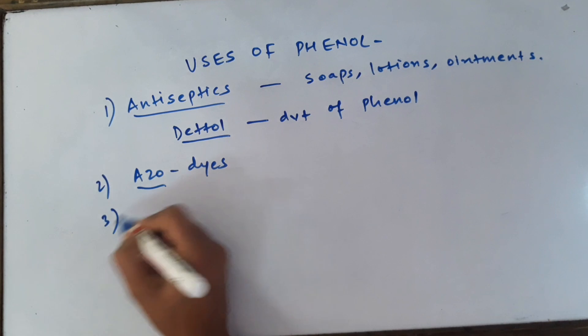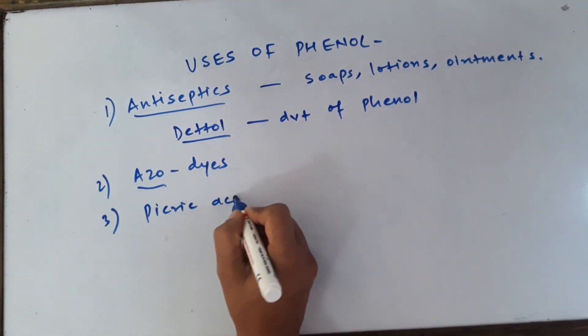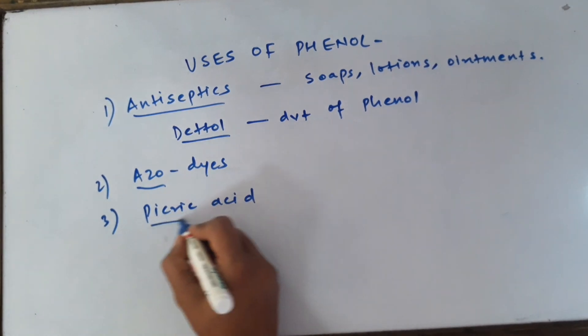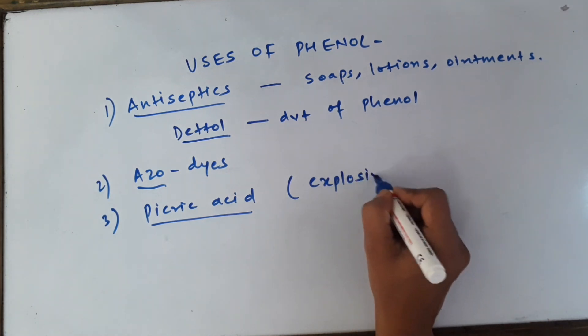The third important use is in the formation of picric acid which we had seen just now if you remember, 2,4,6-trinitrophenol. So phenol is used for preparation of picric acid which is going to be used as an explosive.